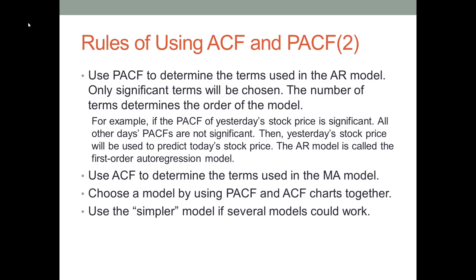In another case, if we find that the PACF values of yesterday and the day before yesterday are both significant, we will use the stock prices of yesterday and the day before yesterday together to predict today's stock price. We call that a second order AR model, because we use two previous day stock prices to predict today's stock price. We can apply the same rule to ACF: if yesterday's ACF is significant, then we should use yesterday's error term to predict the current value. Our model is called a first order MA model.